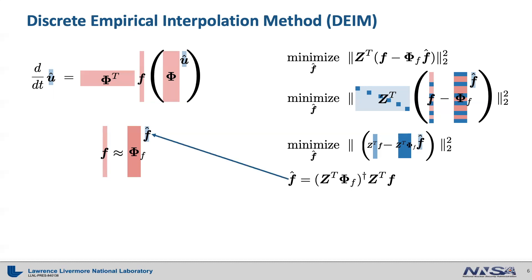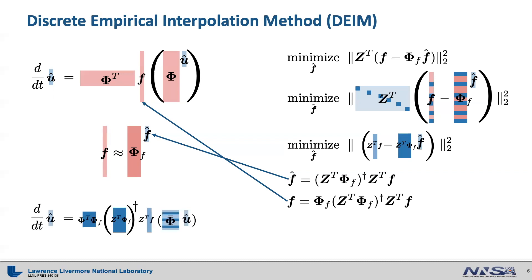We plug this into the reduced basis form of the nonlinear vector functions. Then we get f equals phi sub f times Z transpose times phi sub f pseudo-inverse times Z transpose times f. We plug this into the right-hand side of the reduced ordinary differential equations, finally obtaining a reduced system of ordinary differential equations that does not scale with full order model size anymore. Note that certain terms can be pre-computed once for all, so the system can be efficiently solved by a time integrator scheme.